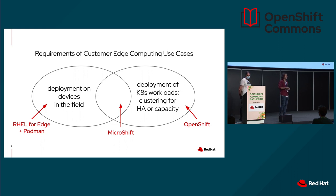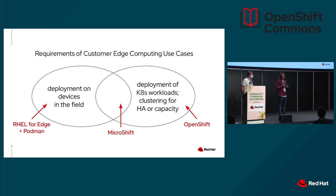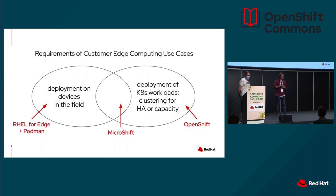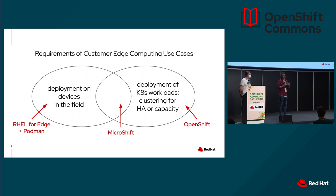On the other side of the spectrum, we have RHEL for Edge. RHEL for Edge is a flavor of Red Hat Enterprise Linux optimized for edge computing use cases. When I say optimized, it's because we pick certain technologies very suitable for these scenarios, like RPM-OSTree for immutability, automatic upgrades and rollbacks in case something goes wrong, and a secure onboarding process for devices. This operating system is designed for field deployed devices. The recommended way to deploy applications on RHEL for Edge is by using Podman, usually static containerized workloads. MicroShift comes in to fill the gap in between — to manage workloads consistently from the cloud to the edge.